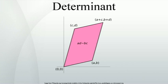A number of additional properties relate to the effects on the determinant of changing particular rows or columns. Viewing an n×n matrix as composed of n columns, the determinant is an n-linear function. This means that if one column of a matrix A is written as a sum V + W of two column vectors and all other columns are left unchanged, then the determinant of A is the sum of the determinants obtained by replacing the column by V and then by W. This n-linear function is an alternating form: whenever two columns of a matrix are identical, or the columns form a linearly dependent set, its determinant is zero.